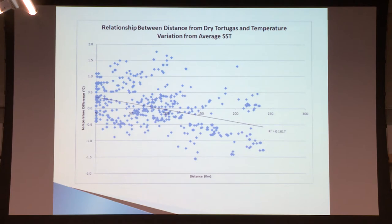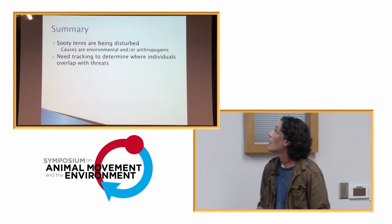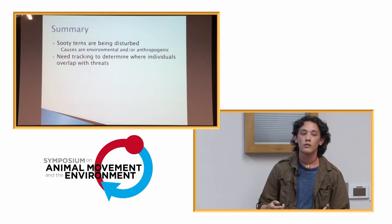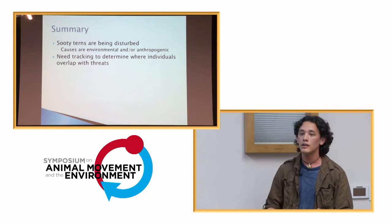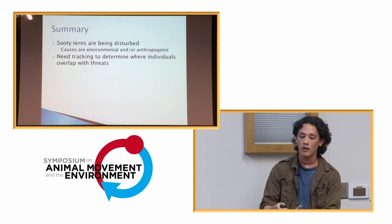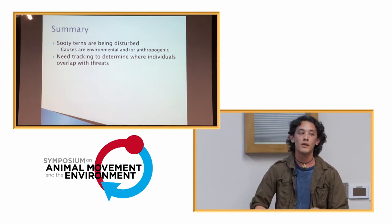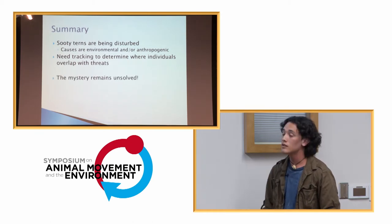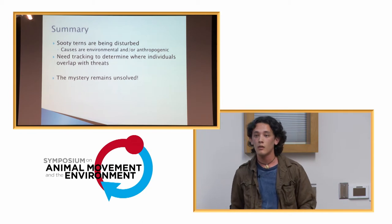That's about all the results I have for now. We know that sooty terns are being disturbed, as evidenced by their shift in breeding regime — something is changing their behavior. We're not entirely sure whether the cause is environmental or anthropogenic in origin. That's why we need all the animal tracking data: to narrow our search window, find where these birds are overlapping with potential threats, and ultimately solve the mystery of what's driving the shift. The mystery still remains unsolved, and I'd love to hear what people think.